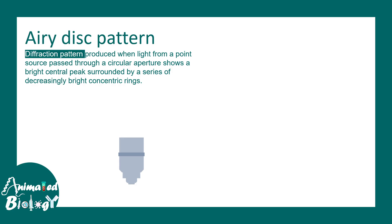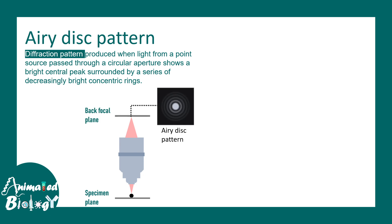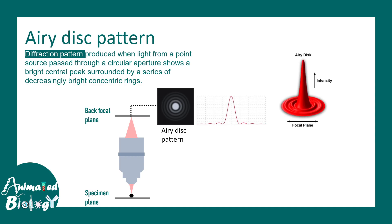The resolution of a microscope can be understood through the airy disk pattern formed at the back focal plane of the objective. A point specimen emitting light forms an image at the back focal plane. This image doesn't appear as a true point — instead it's a diffraction pattern with a central maxima and multiple minima surrounding it, forming concentric rings. One can plot this as an intensity profile, and in 3D it can be visualized as a central maxima peak. This is the airy disk pattern.